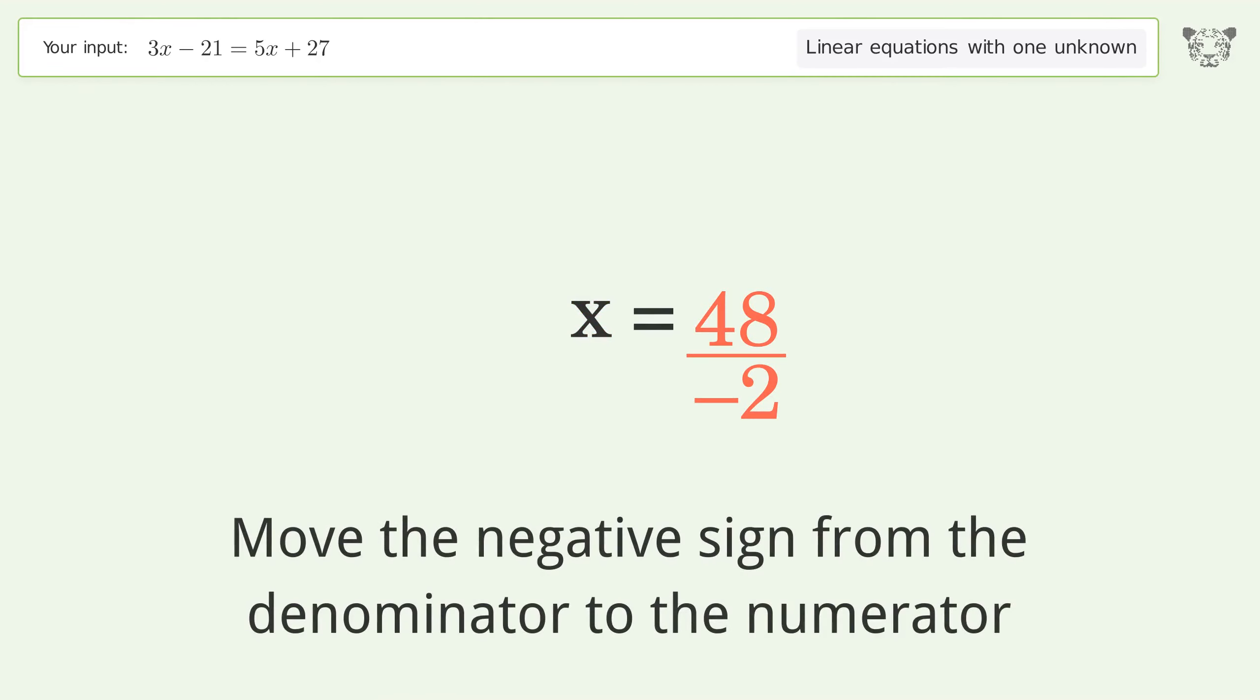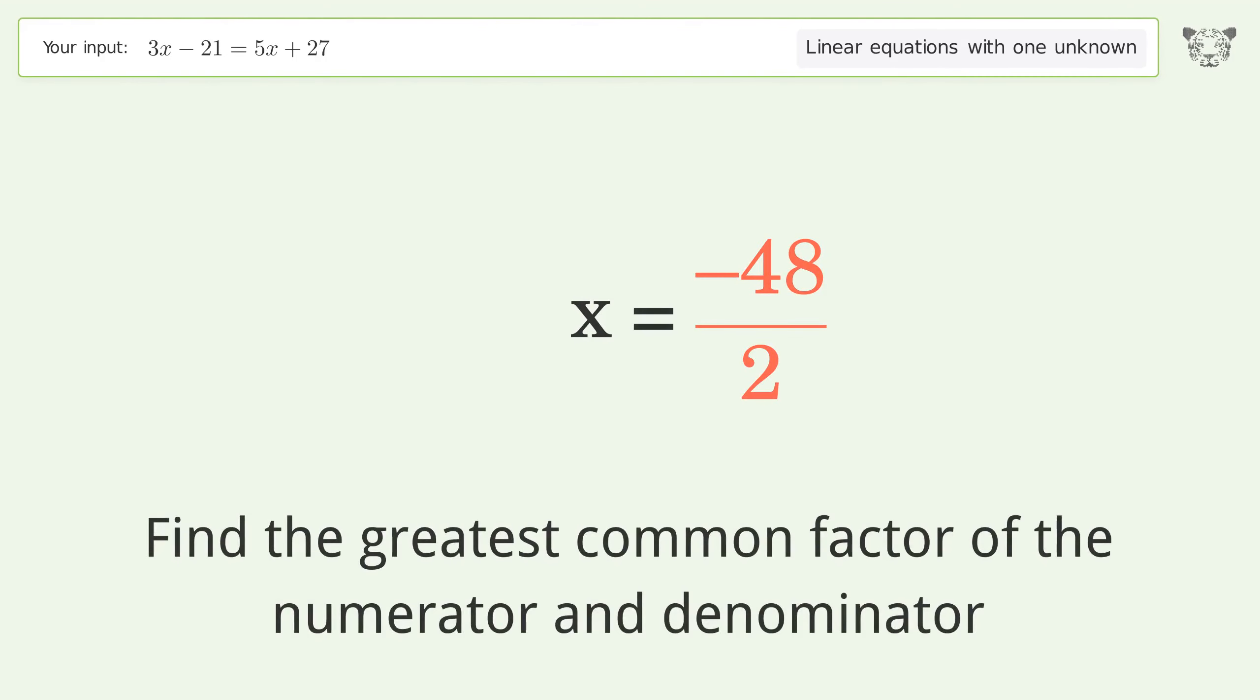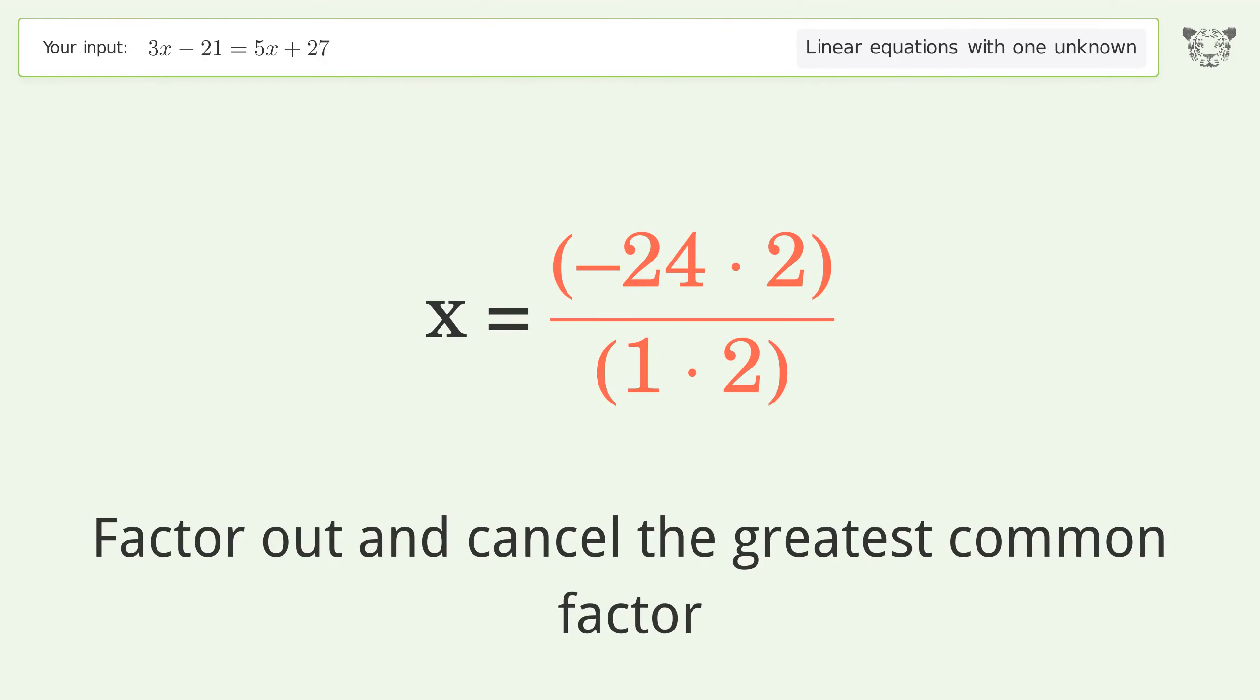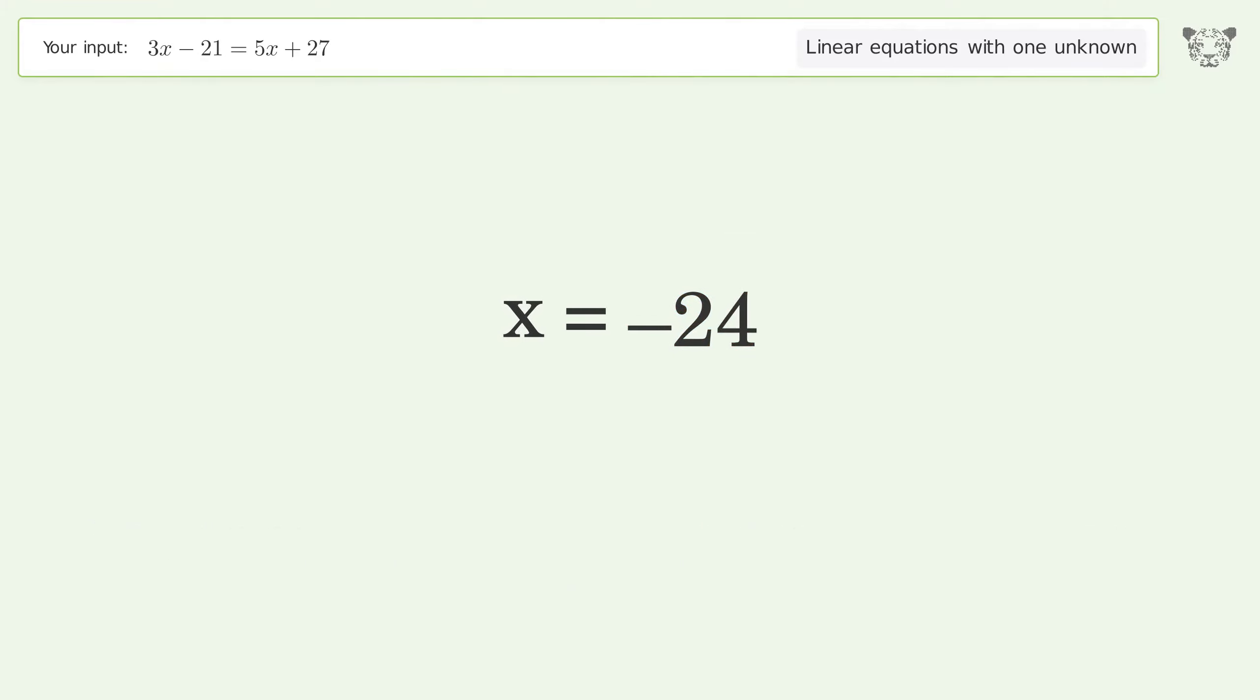Move the negative sign from the denominator to the numerator. Find the greatest common factor of the numerator and denominator. Factor out and cancel the greatest common factor. And so the final result is x equals negative 24.